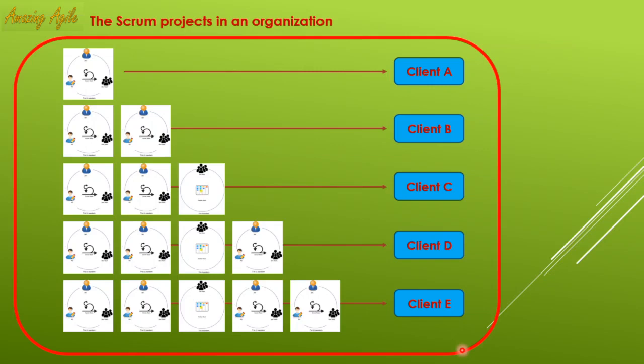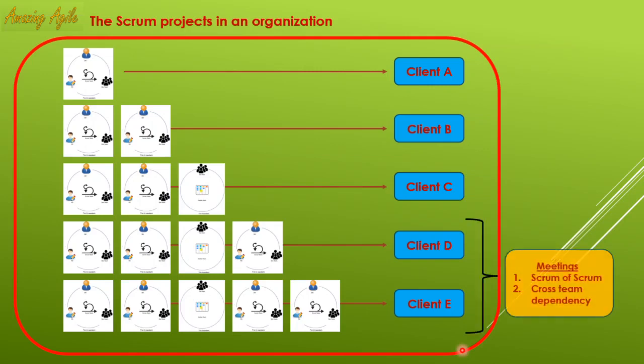For client D and client E, you have to conduct a Scrum of Scrum meeting and a cross-team technical meeting for dependency management. These two additional meetings are not mentioned in regular Scrum, but when you run multiple projects on the Scrum platform, you must hold them. Scrum of Scrum means all scrum masters from different projects meet at one point in time to discuss project status, dependencies, and roadblocks, and try to find solutions. Similarly, a cross-project dependency meeting must be established.